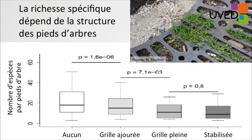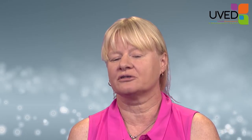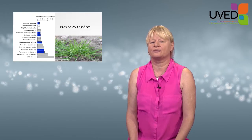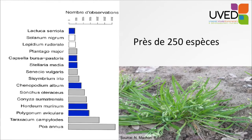Very few species were found if the bottom of the tree was covered in concrete or sand. The species found in the area of the Bercy station number 250, found in the 1,500 tree bottoms. We have dandelion, knotweed, wild barley, etc., as being the most frequently found.